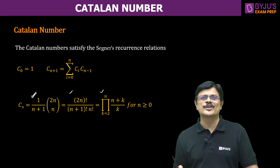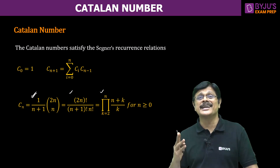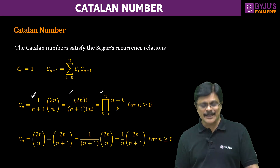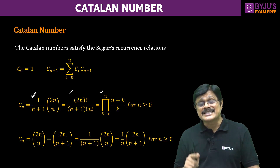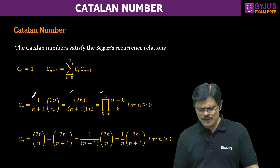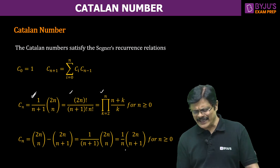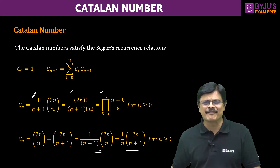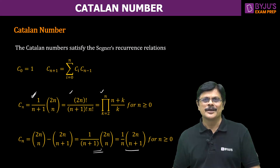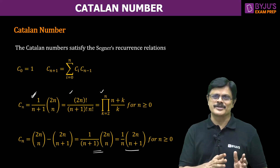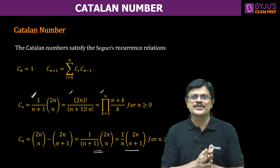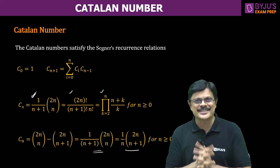You can also express it in one more way: 2n choose n minus 2n choose (n+1). If you simplify, you again get the same formula. So all these forms of the Catalan number are actually solutions for this particular Segner's recurrence.